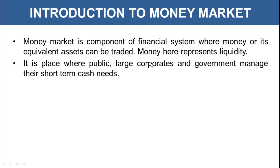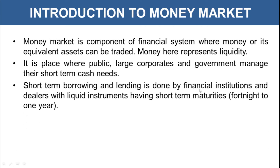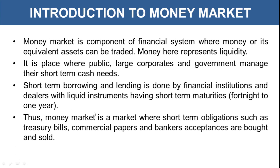It is a place where the public, large corporates, and government manage their short-term cash needs. Short-term borrowing and lending is done by financial institutions and dealers with liquid instruments having short-term maturities from fortnight to one year. Thus, money market is a market where short-term obligations such as treasury bills, commercial papers, and banker's acceptances are bought and sold.